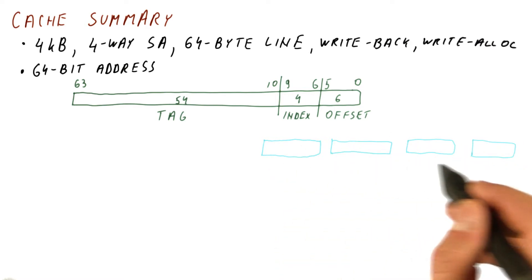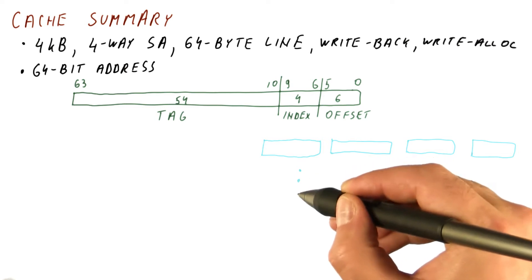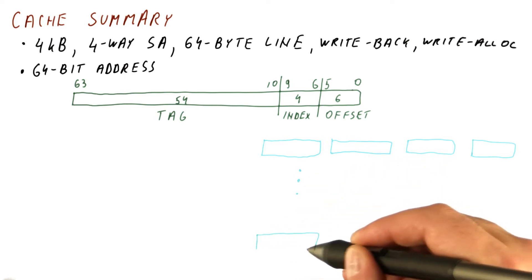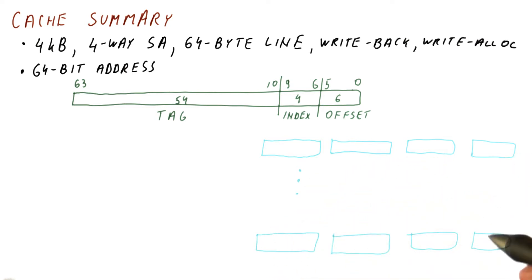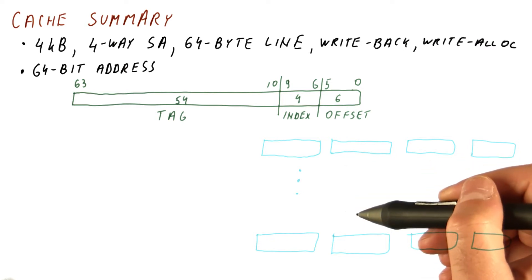So these are the lines that belong to set 0. Then we will have additional lines, and there will be lines that belong to set 15. There are 16 sets, if you remember.